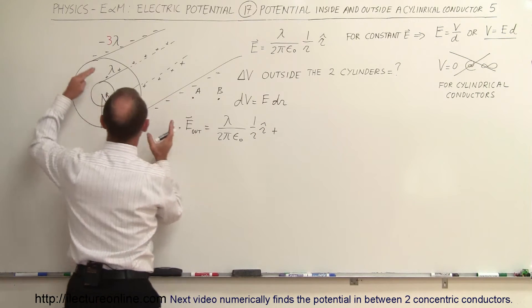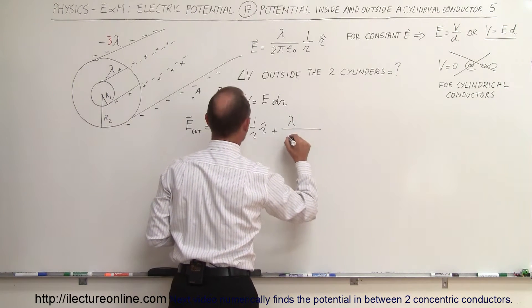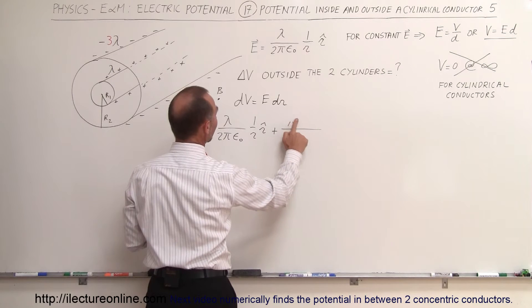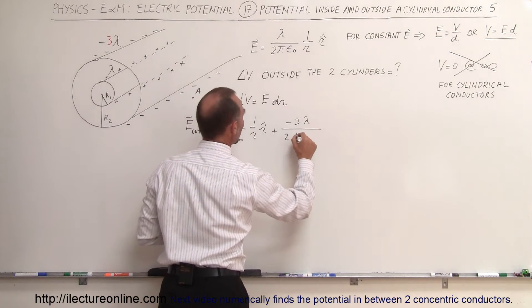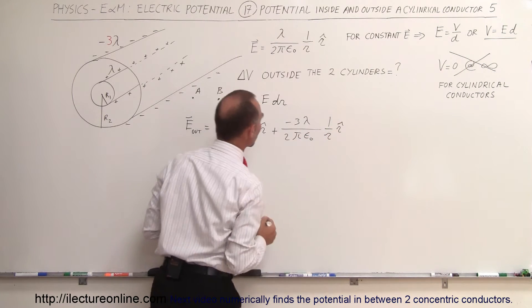And then plus the electric field contributed by the outside cylinder, which is going to be λ divided by 2, oh not λ, it's going to be now minus 3λ, isn't it? Based upon that, so minus 3λ divided by 2πε₀, 1 over r times the unit vector.